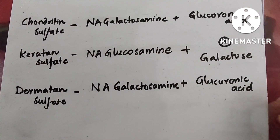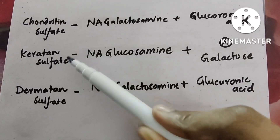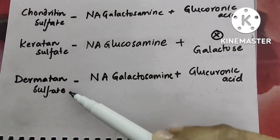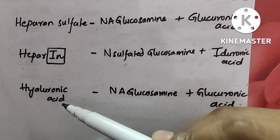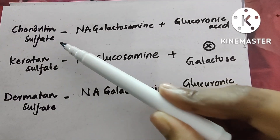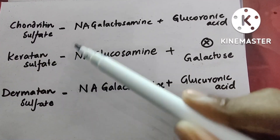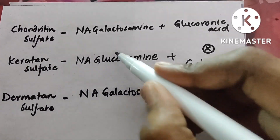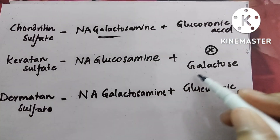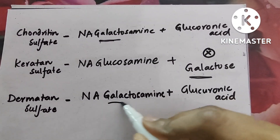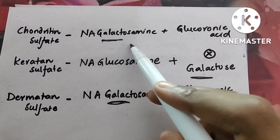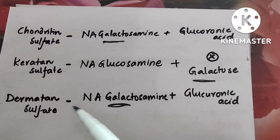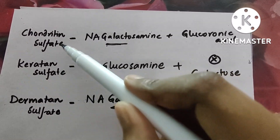There are six types: chondroitin sulfate, keratan sulfate, dermatan sulfate, heparan sulfate, heparin, and hyaluronic acid. The second page covers heparan sulfate, heparin, and hyaluronic acid; the first page has chondroitin, keratan, and dermatan. First page has galactose in some or the other form, whereas second page does not have galactose — remember it like that.